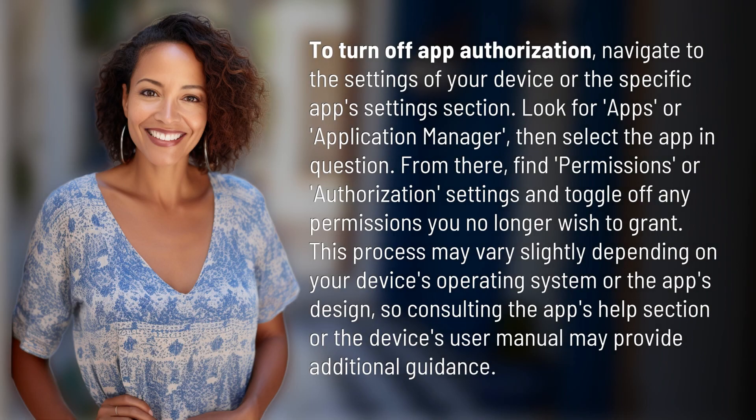To turn off app authorization, navigate to the settings of your device or the specific app settings section. Look for Apps or Application Manager, then select the app in question.